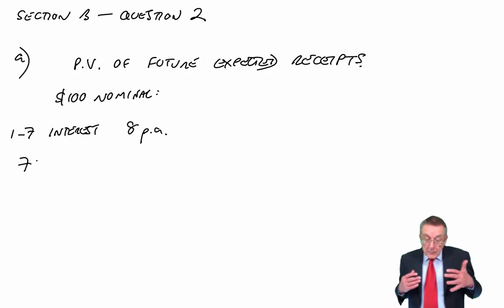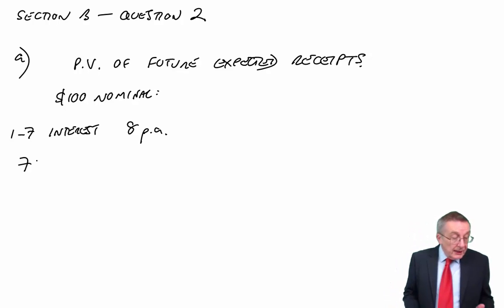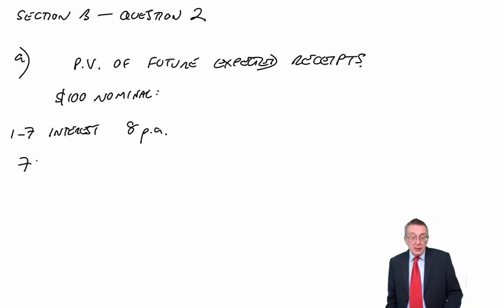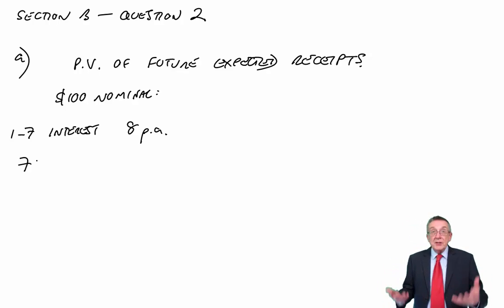In seven years' time, they're going to have a choice. They'll either be able to take cash at the nominal value of $100, or they can take shares. It says they're convertible into 8 ordinary shares. Now, it'll be the bondholders, the loan notes' choice as to whether to convert or not, and they won't make the decision until seven years' time. In seven years' time, they'll look to see which is better, eight shares or $100.